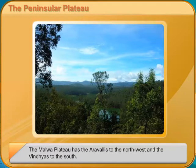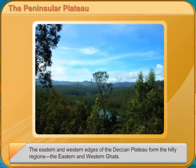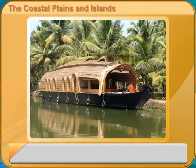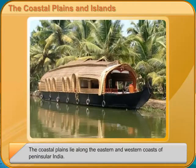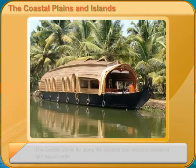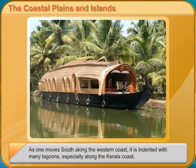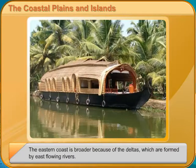The coastal plains lie along the eastern and western coasts of Peninsular India. The western coast is narrower, with rivers Narmada and Tapi forming estuaries. As one moves south along the western coast, it is indented with many lagoons, especially along the Kerala coast. The eastern coast is broader because of deltas formed by east-flowing rivers. The islands include the Andaman and Nicobar Islands in the Bay of Bengal and the Lakshadweep Islands in the Arabian Sea.